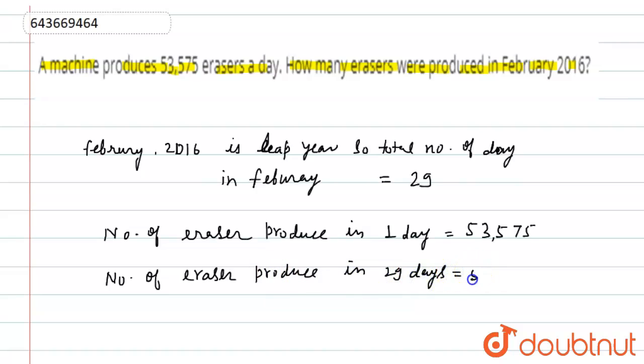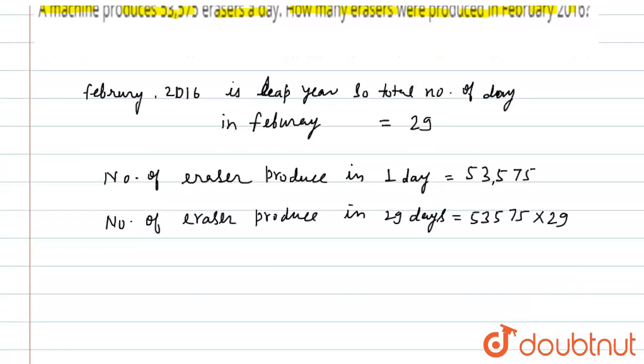Number of erasers produced in 29 days will be equal to 53,575 multiplied by 29. This will be equal to, now we multiply,